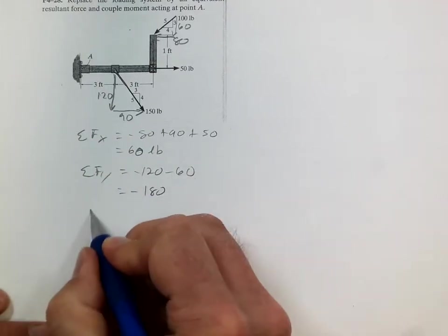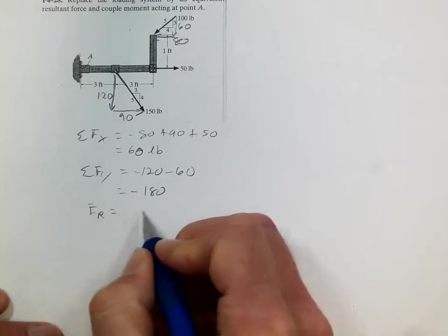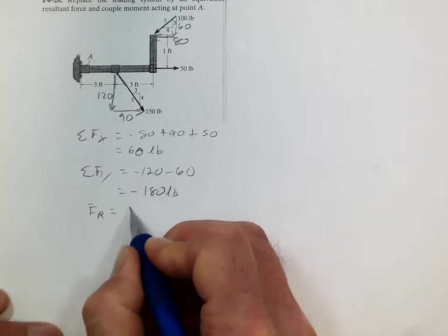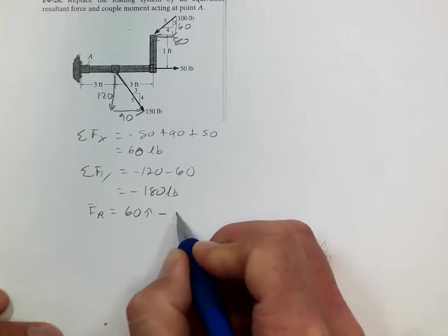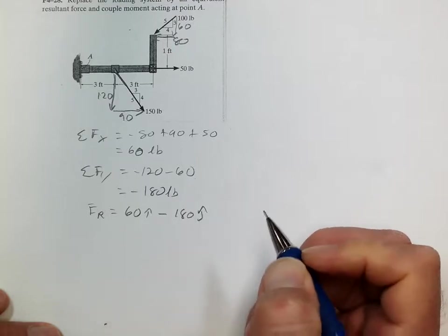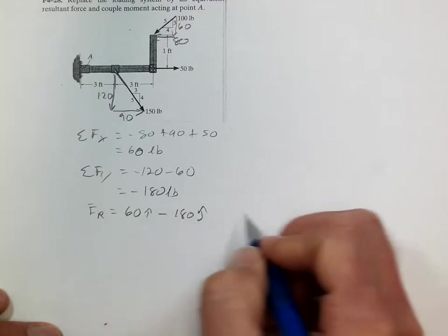So the resultant force is equal to 60 in the i minus 180 in the j, and those are both pounds.